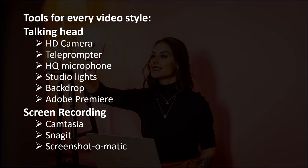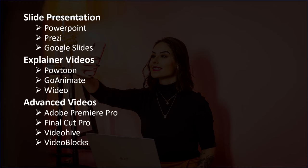Video Production Tools. To produce the video formats mentioned, you need to have the right tools. For talking head videos: HD Camera, Teleprompter, High Quality Microphone, Studio Lights, Backdrop, and Adobe Premiere. For screen recording: Camtasia, Snagit, and Screencast-O-Matic. For slide presentations: PowerPoint, Prezi, and Google Slides. For explainer videos: Powtoon, GoAnimate, and Video. For advanced videos: Adobe Premiere Pro, Final Cut Pro, Video Hive, and Video Blocks.